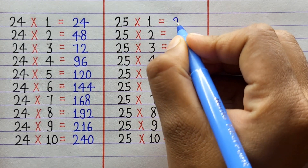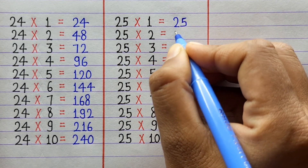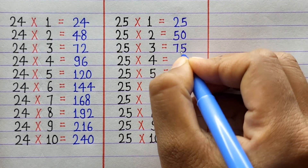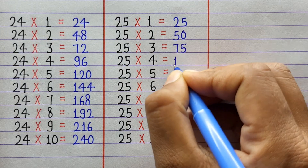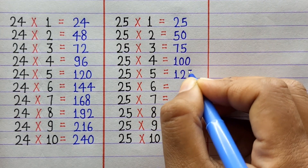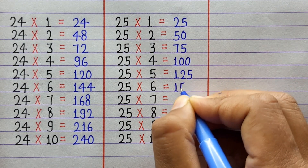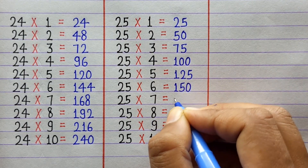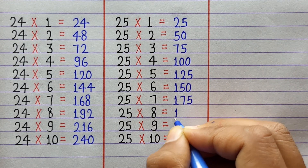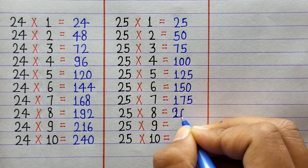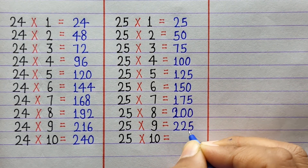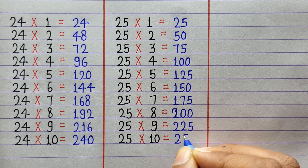25×1=25, 25×2=50, 25×3=75, 25×4=100, 25×5=125, 25×6=150, 25×7=175, 25×8=200, 25×9=225, 25×10=250.